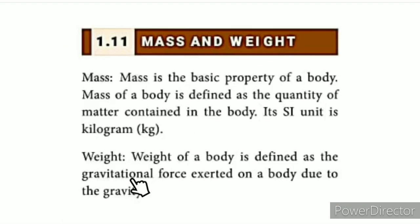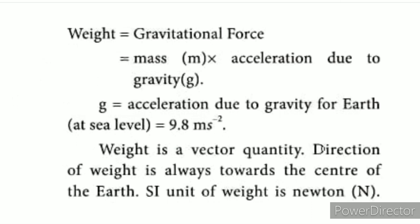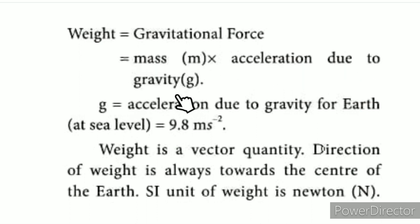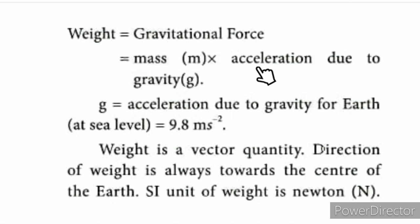Weight of your body is defined as the gravitational force exerted on your body due to gravity. Using Newton's second law, weight W equals mass m times acceleration due to gravity g. So W = m × g. While mass is constant, g can vary — on Earth or on the moon, g has different values.